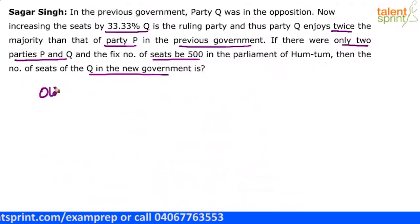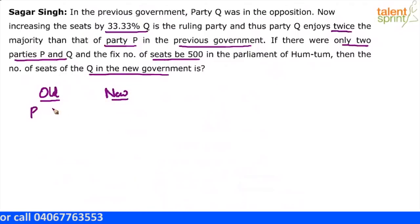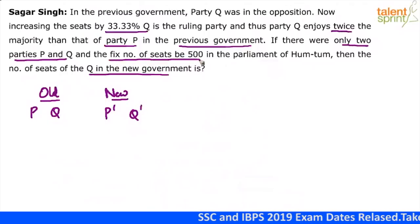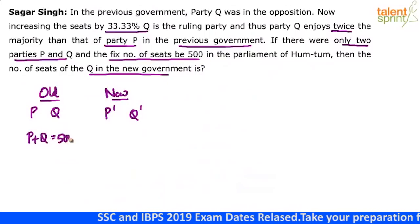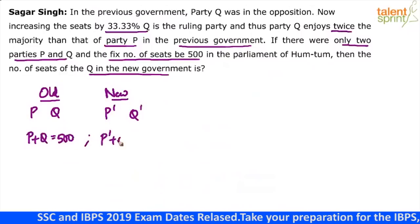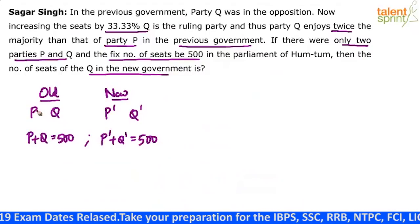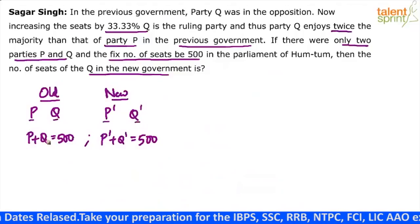Let us talk about two points: old government and the new government. Let the number of seats of party P in the old government be P and that of Q be Q. In the new government, party P is P dash and party Q is Q dash. Now, we know that the number of seats are fixed — there are fixed number of seats, which is 500 in the parliament. So P plus Q equals 500, which means P dash plus Q dash is also 500. So two equations already, with four variables P, Q, P dash, Q dash.